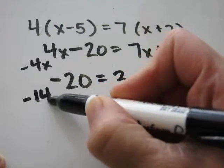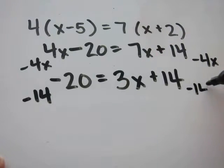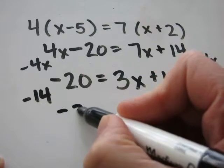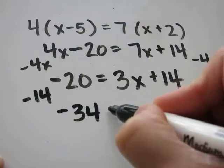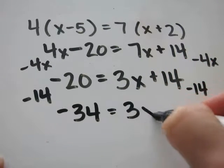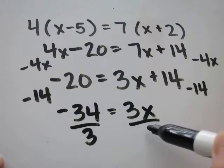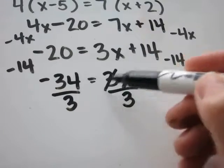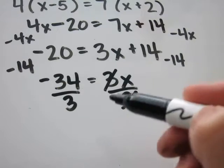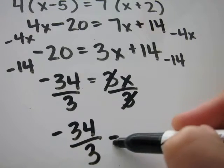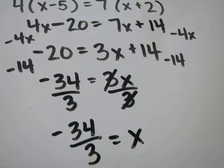I'm going to subtract 14 from each side. 14 minus 20 is negative 34, 3x. To solve, divide each side by 3. The 3's cancel out. You're left with negative 34 over 3 equals x.